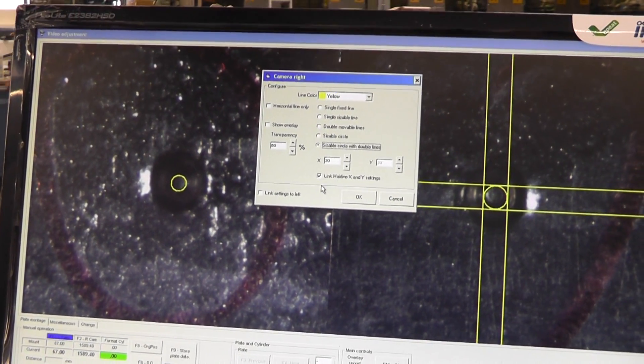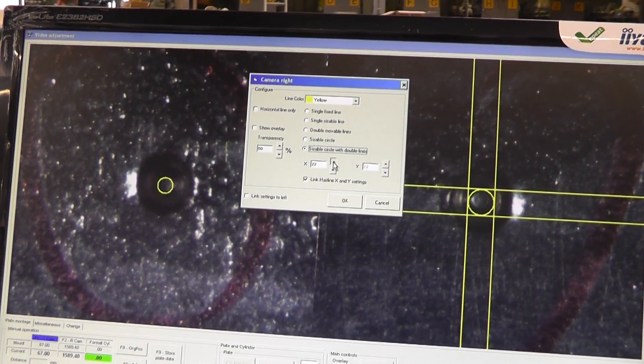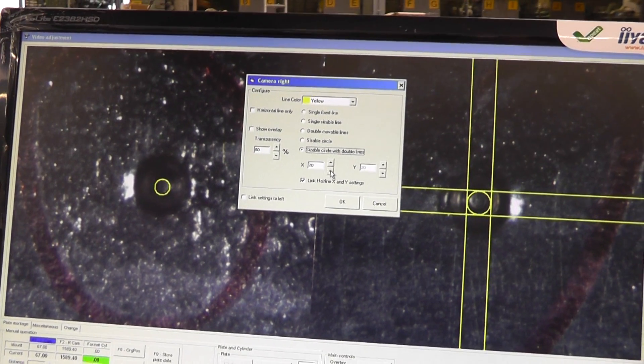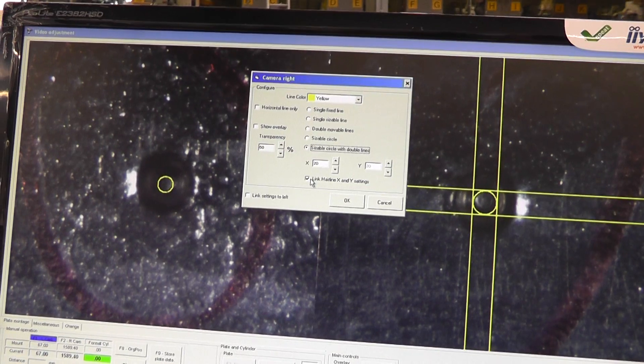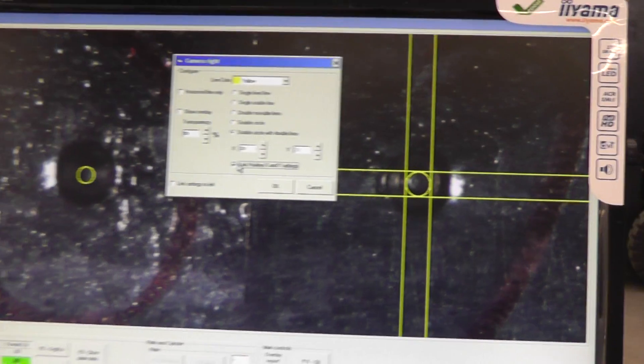Or you can have a circle with double lines. So for jobs that have got older style micro dots, and older configurations of dots, we can just adjust each job to suit? Exactly. Yeah, okay. Yeah. Okay, that's perfect.